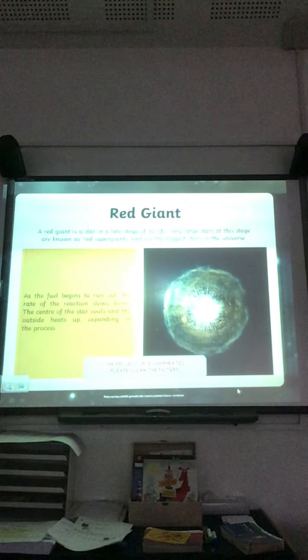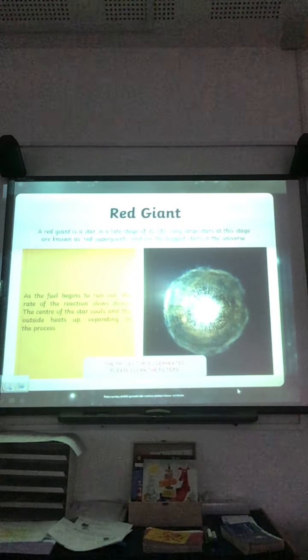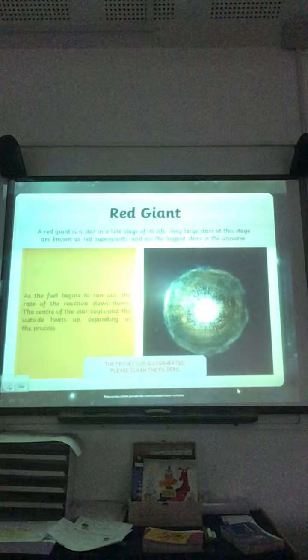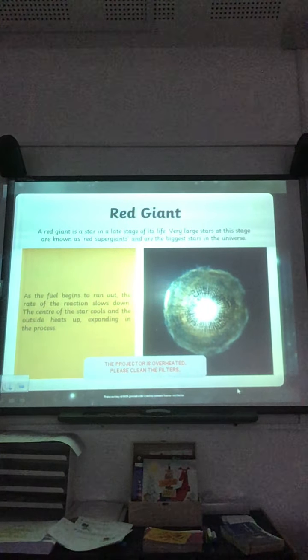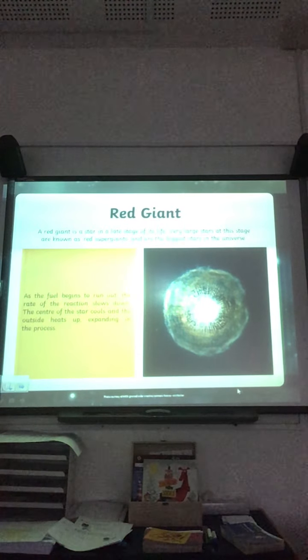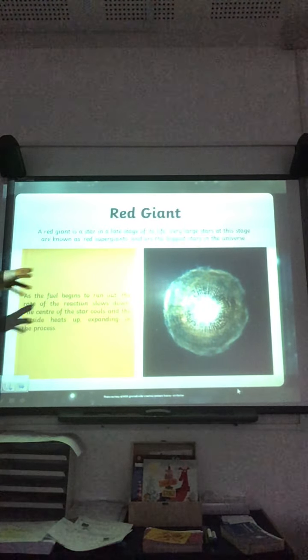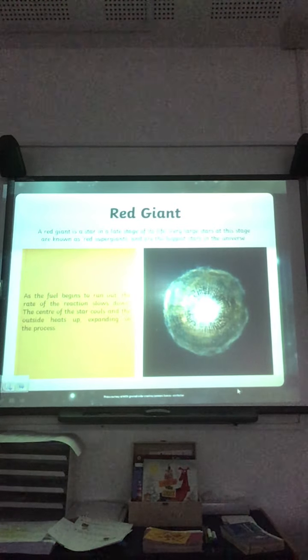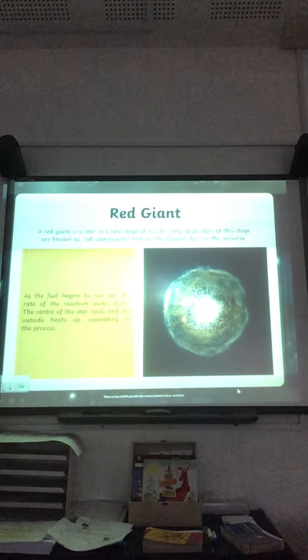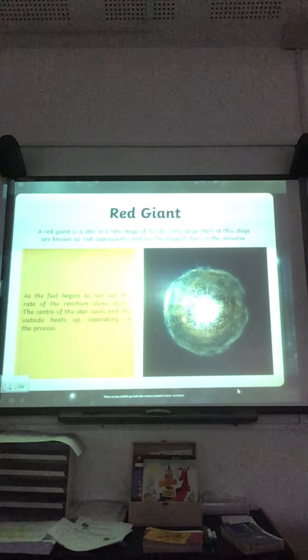A red giant is a star in a late stage of its life — a bit like Mr. FT! Very large stars at this stage are known as red supergiants and are the biggest stars in the universe. As the fuel begins to run out, the rate of the reaction slows down within the star. In the centre of the star it cools, and the outside heats up and expands in the process.